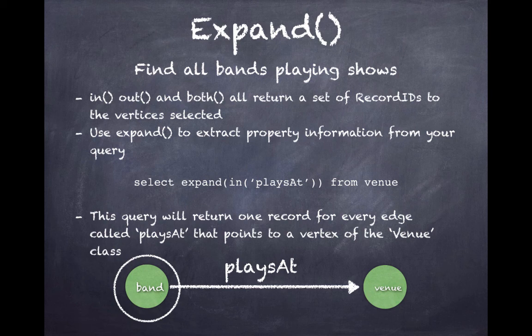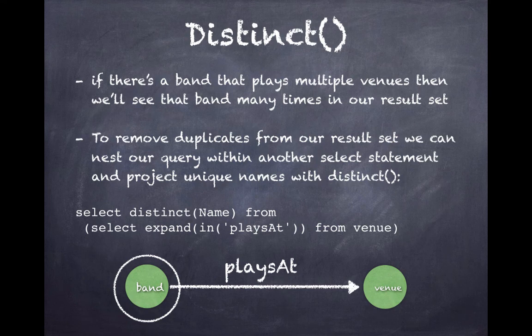If we said select EXPAND in playsAt from venue, then we'll find the names of all of the bands that are playing at all of the venues. This query returns one record for every edge called playsAt that points to a vertex of the venue class. If there's a band that plays multiple venues, then we'll see that band many times in our result set.